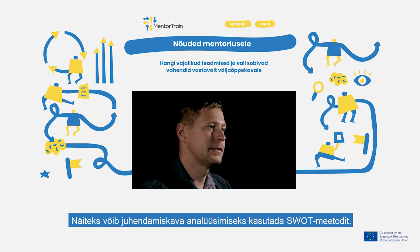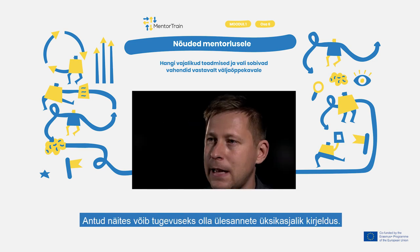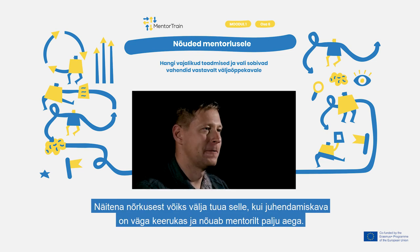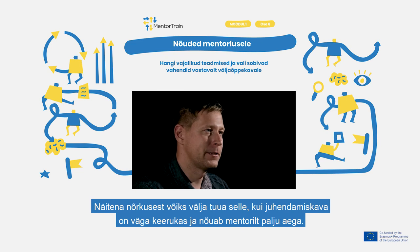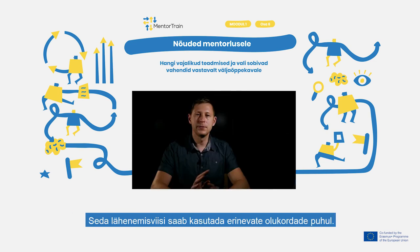For example, we can use SWOT for analyzing the mentorship plan. In a SWOT analysis we find the strengths, weaknesses, opportunities, and threats of the topic we want to analyze. In this example, a strength could be a detailed description of tasks. One example of a weakness could be that the mentoring plan is very complex and takes a lot of time for the mentor, or that it's not possible to plan all the tasks at the beginning of the apprenticeship.